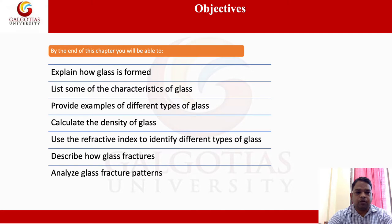Objectives. By the end of this objective, we will be able to explain how glass is formed, list some of the characteristics of glass, provide examples of different types of glass, calculate the density of the glass, use the refractive index to identify different types of glass, describe how glass functions, and analyze glass patterns and chart patterns.